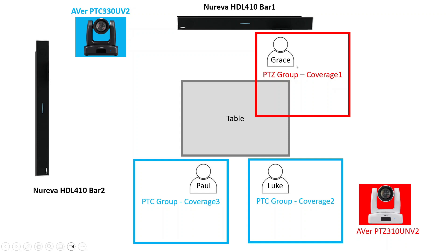Grace will sit here, and we assign this area as coverage 1 on HDO. Then we assign this as a PTZ group, which means this area will be captured by PTZ cameras. Luke is sitting here, and we assign this area as coverage 2 for the HDO bar, and also assign this area for PTZ camera. Paul is sitting here, and this area we assign as coverage 3 for HDO, then assign this as a PTZ group to also be captured by PTZ camera.